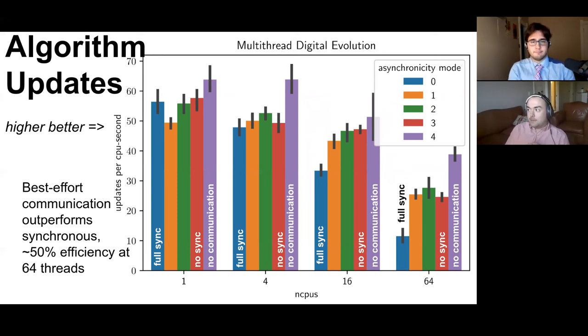And again some of the slowdown as we're going from one thread on the left up to 64 threads on the right is due to factors not related to communication as shown by the decrease in the update rate of our no communication control. However we are seeing significantly better performance of the best effort model compared to the synchronous model here.